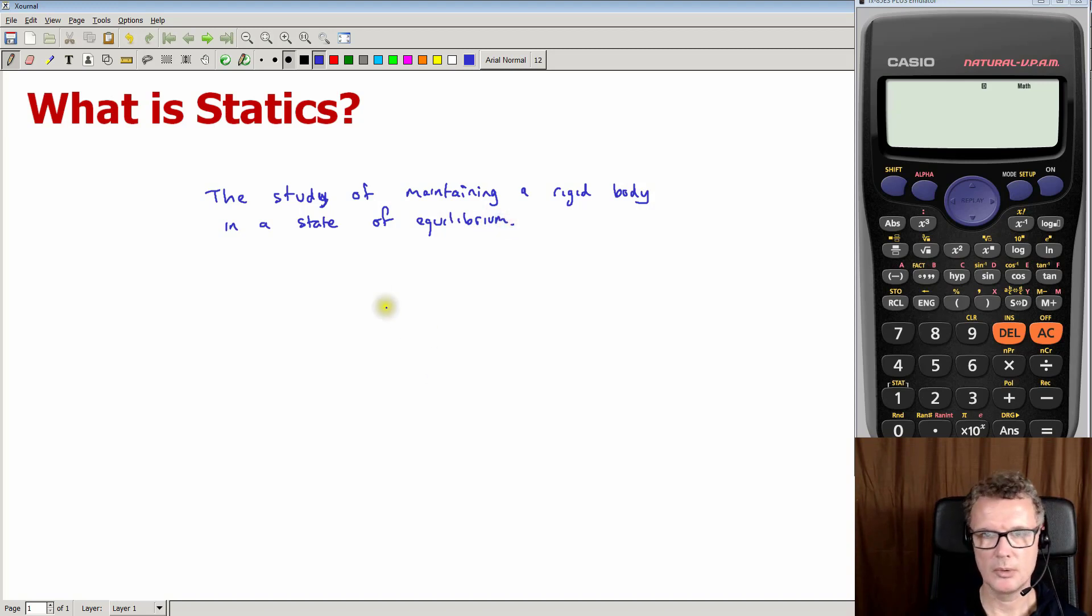Okay, so we've got a rigid body. Let's have a box. What could this box be doing? So this box could be accelerating off, but it's not. That's not possible because of the state of equilibrium.